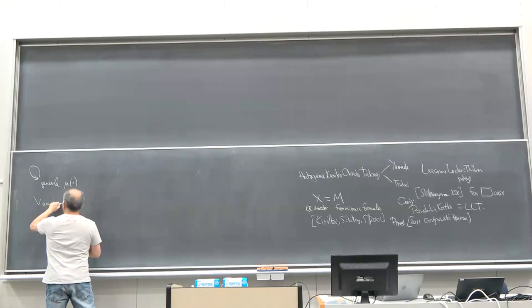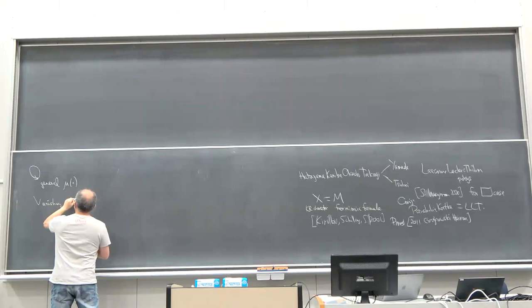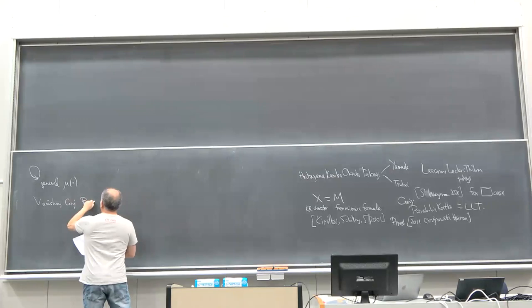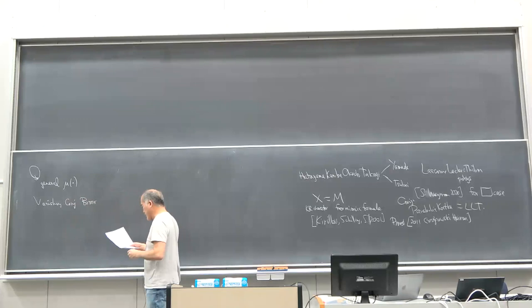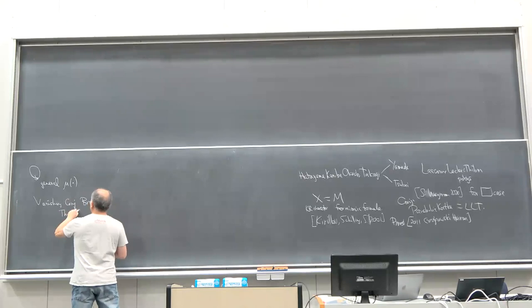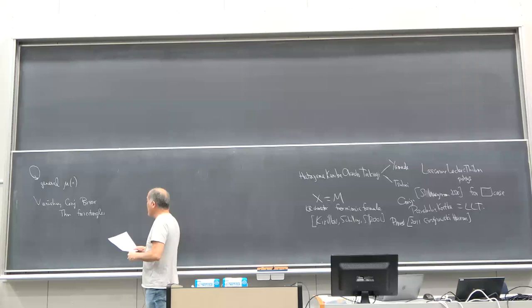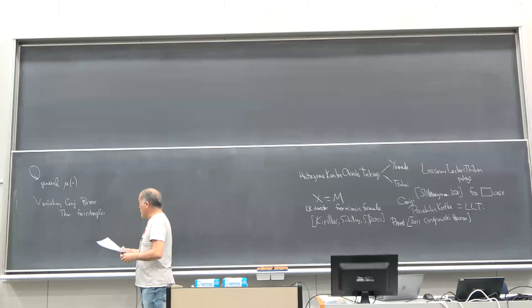In this special case, the vanishing conjecture is due to Rietsch — he told me about this problem. He had an Inventiones paper where he proves it for rectangles. In type A, what he proves it for is rectangles, so he proved the vanishing theorem in the rectangles case, but didn't know how to do it when your partition was ragged — not nice rectangles.